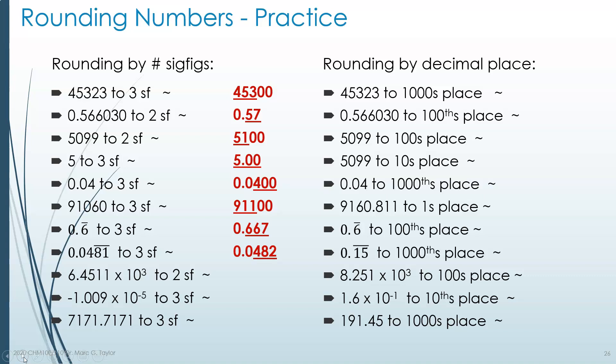Scientific notation is much easier to deal with. 6.4511 × 10³ to two significant digits — all digits are significant, and we just want two. We round the 4 up because the 5 after it is a large number. So the answer is 6.5 × 10³.